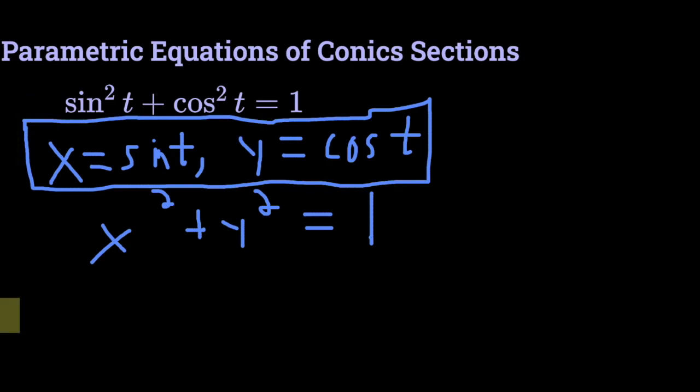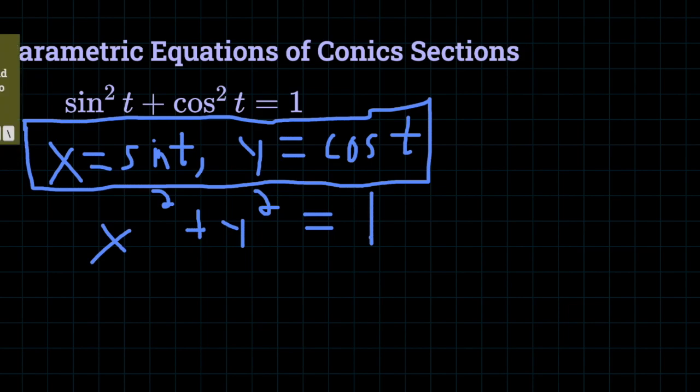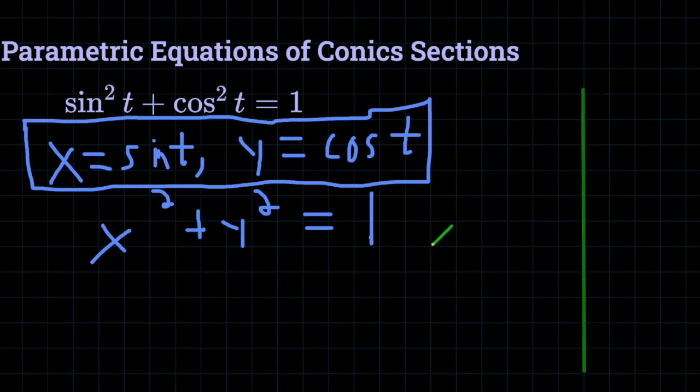Now if we think about what that would look like, let's draw ourselves a little picture. And let's think about different important values here. So when t is equal to zero, it would be sine of zero, which is zero, and cosine of zero, which is one. So the point would be zero comma one, which is up here.